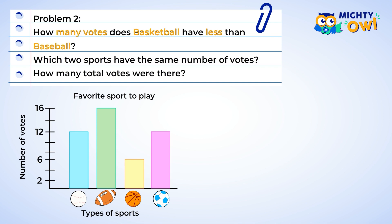How many votes does basketball have less than baseball? First, we need to find the number of votes each of those sports have. Here is the bar for basketball — if we follow it to the top of the graph on the left, it ends at 6. Basketball has 6 votes. Now if we do the same for baseball, follow it along to the top on the left, and we hit the number 12. Now we can find the difference using subtraction: 12 minus 6 is 6.